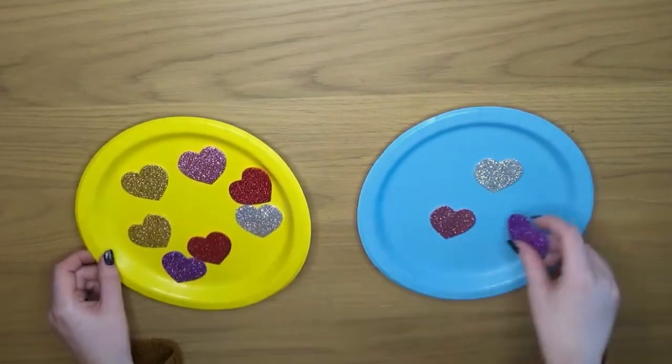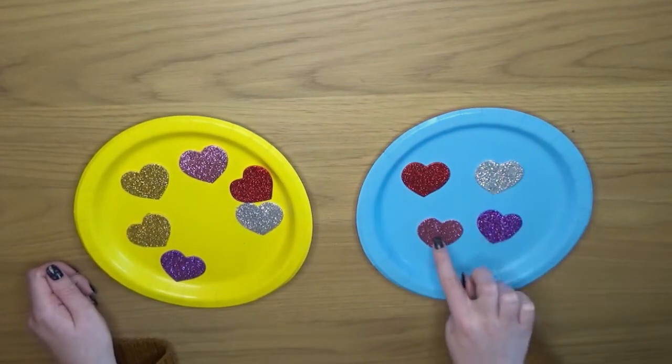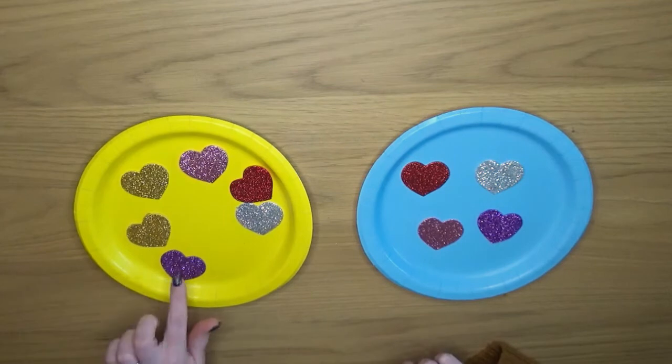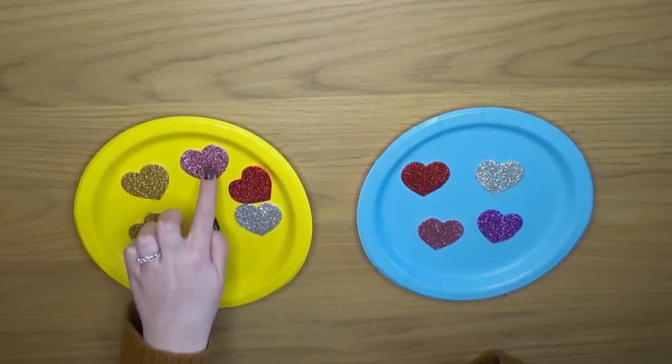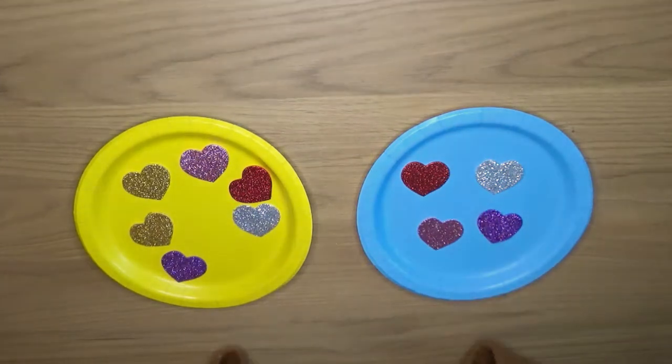Children can then start moving their objects or counters across the plates to find different number bonds to ten. Don't forget it's very important at the beginning of this exercise that children understand there are ten objects altogether.